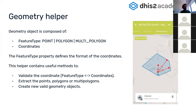There is a geometry helper because starting from version 2.30 or 2.32, the geometry model changed and now includes point, polygon, or multi-polygon. The geometry object became more complex, so this helper validates whether feature type coordinates are valid for a polygon or a point, helps extract points, polygons, or multi-polygons, and creates new valid geometry objects.